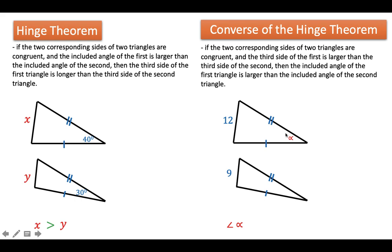So in here, the angle is represented by angle alpha. So angle alpha is larger than whatever the measure of angle theta, and that is by the converse of the Hinge Theorem.